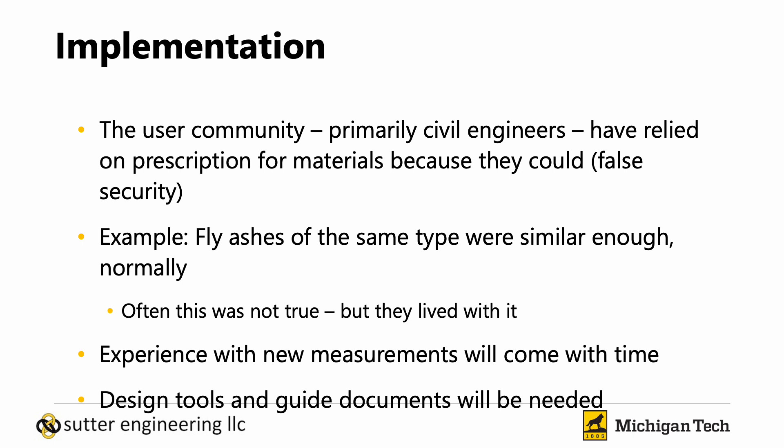The user community has relied on prescription for materials in the past. The range of properties for a given material such as Portland cement or fly ash was not as great as the range we'll see when comparing two alternative SCMs or alternative cements. In the past, specifiers assumed two Class F ashes would perform the same — this is not necessarily true. Monitoring key properties such as reactivity will aid in identifying variances, even with conventional materials. The user community will need training and increased reliance on trial batching.